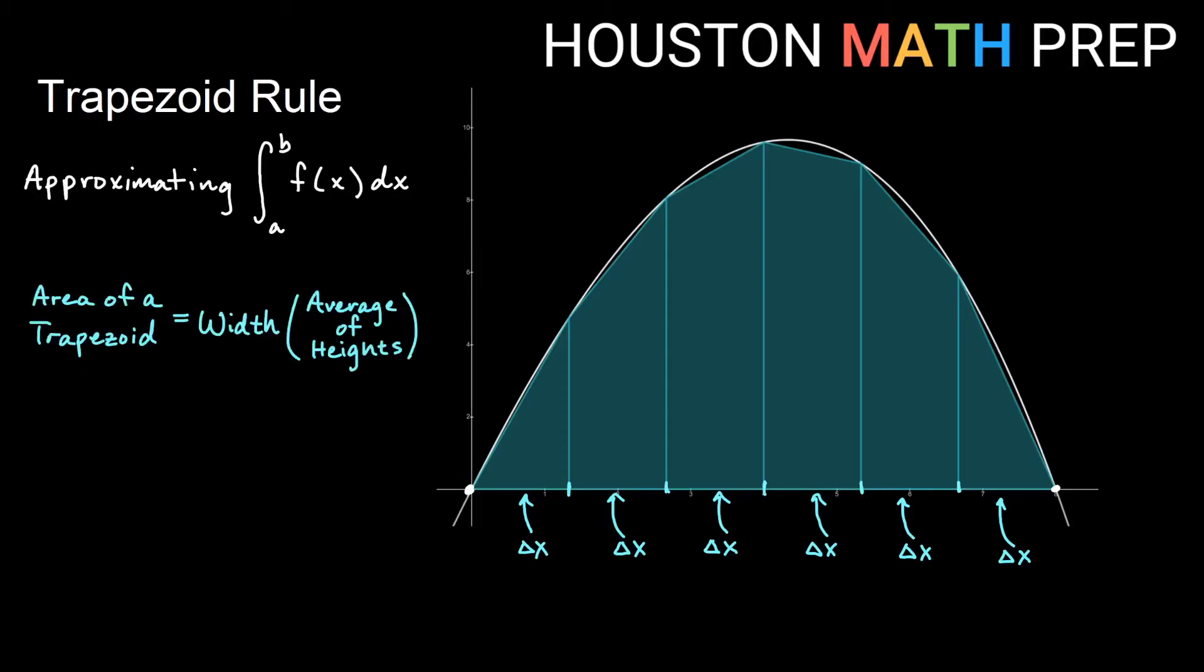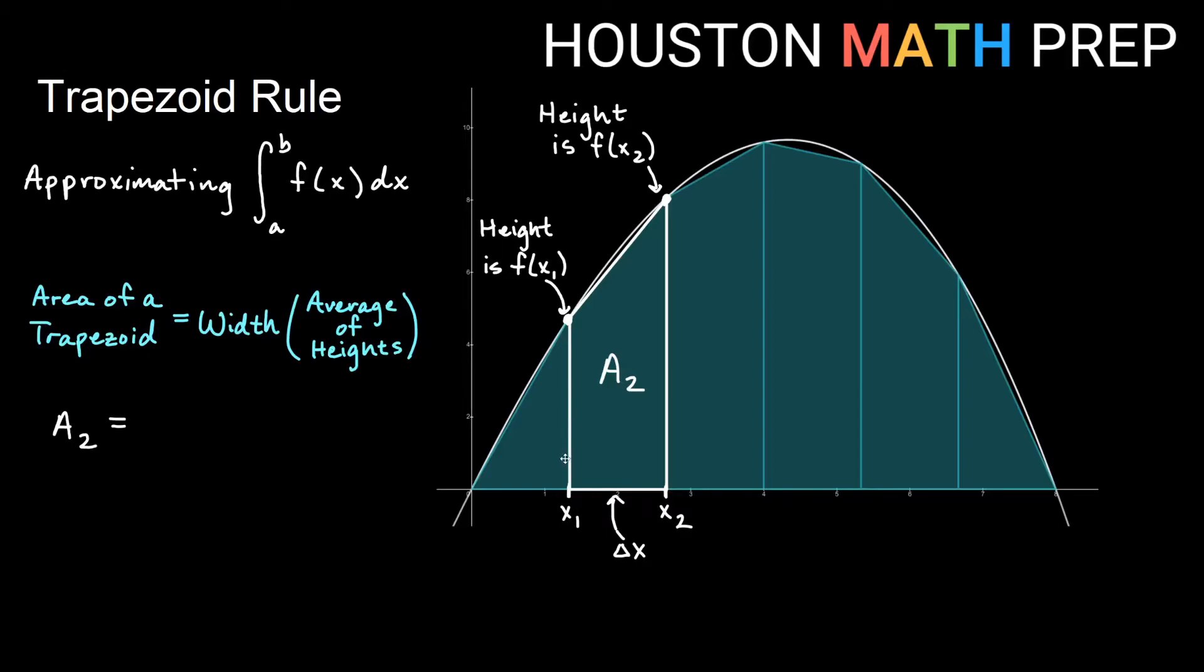So the area of a trapezoid is going to be the width of the trapezoid times the average of the heights. That's the formula for area of a trapezoid. Just arbitrarily choosing one of my trapezoids and looking at finding the area, the width is always going to be delta x. The average of the heights will be the average of the endpoint heights. This left endpoint height is the y value that's above x1, in other words, f of x1. And the right endpoint height is going to be the y value above x2 here, so that will be f of x2. So our area for our second trapezoid will be delta x times the average of the heights, which will be those two y values added up and divided by 2.